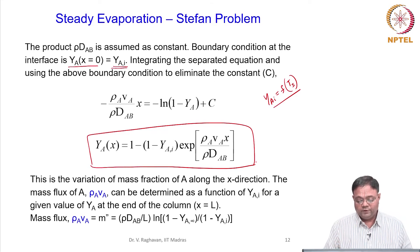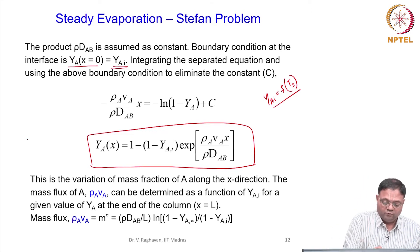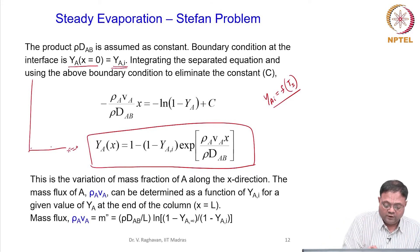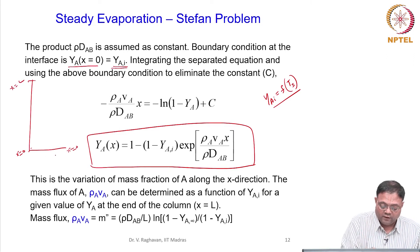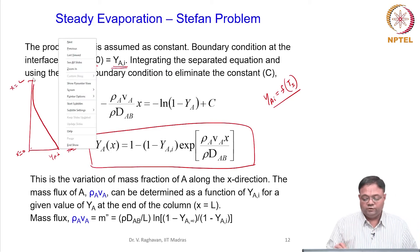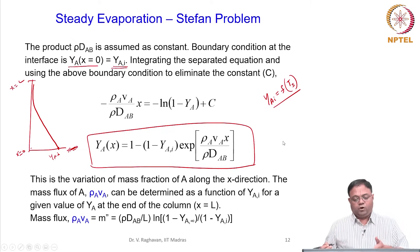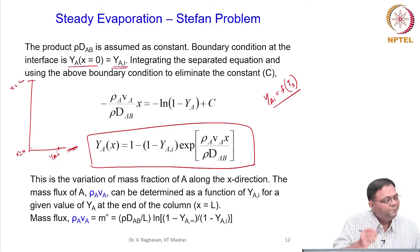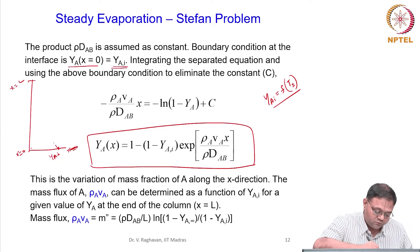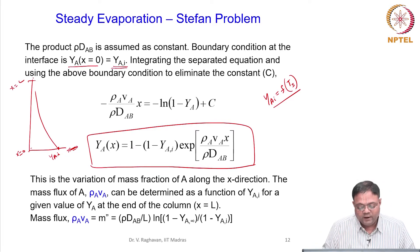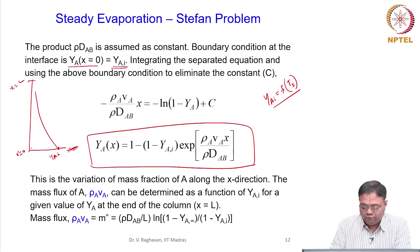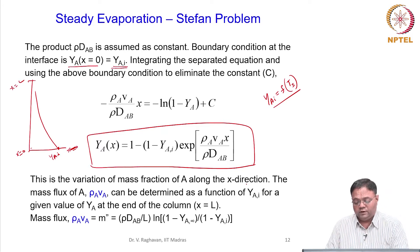This is the variation of mass fraction. From x = 0 (surface) to x = L (top of tube), Y_A shows a non-linear variation along the column. Y_AI is at the interface and slowly reduces as you go upwards. This is the variation of mass fraction of A along the x direction.